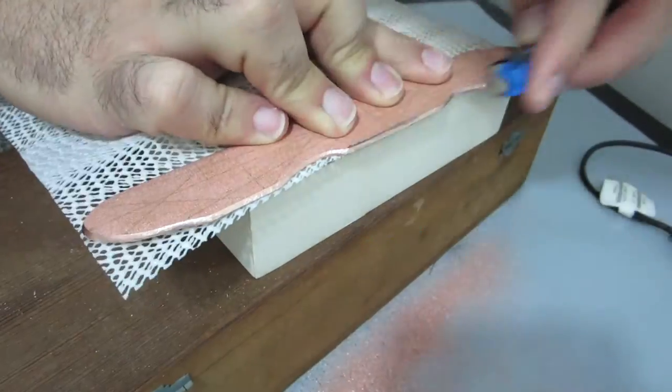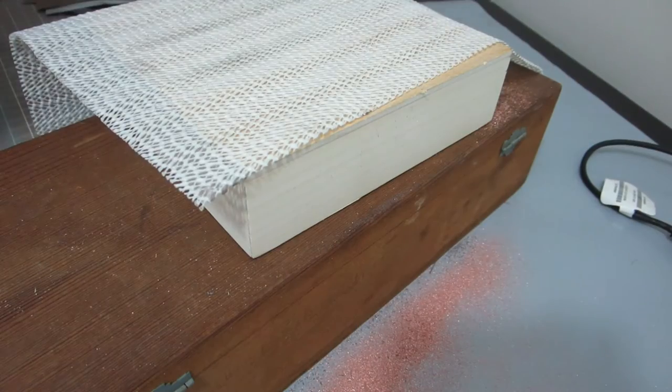After filing, I use 600 and then 1000 grit sandpaper wrapped around the block to really polish the edges up.